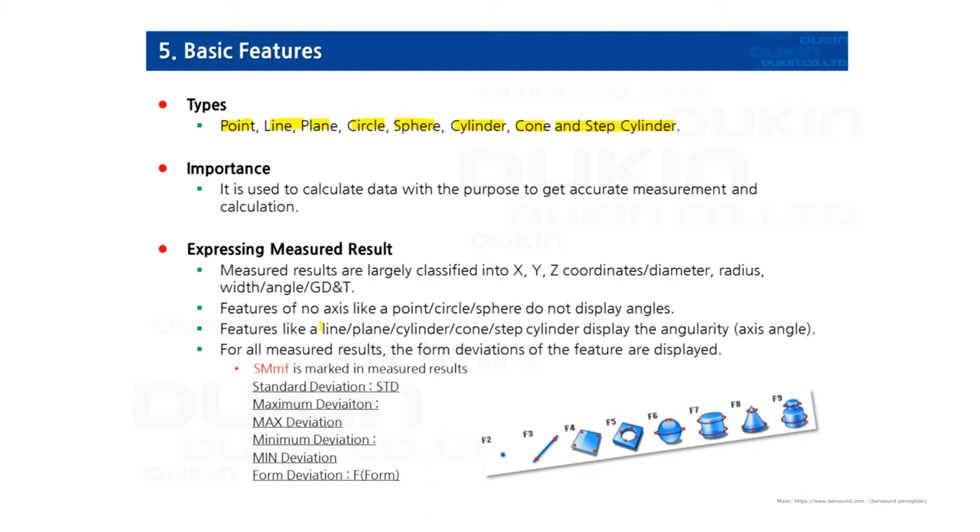Line, plane, cylinder, cone, and step cylinder display the angularity, which is axis angle. And A1, A2 stands for their angle of the axis.